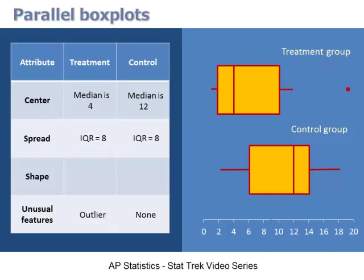Finally, let's consider the shape of the dataset. In the treatment group, observations are concentrated on the left side of the graph, which indicates that the treatment dataset is skewed right. In the control group, observations are concentrated on the right side, which means that the control group is skewed left.